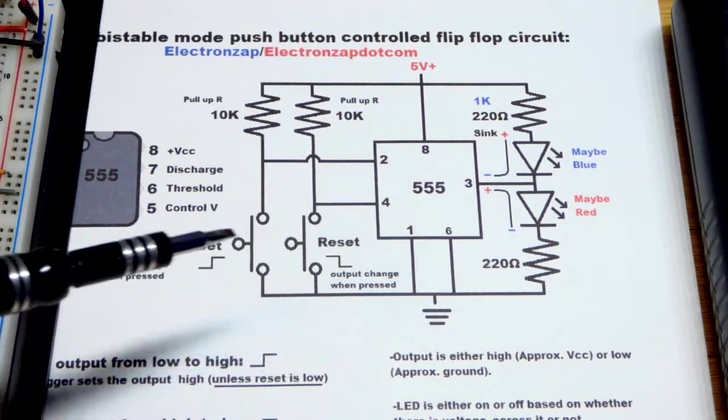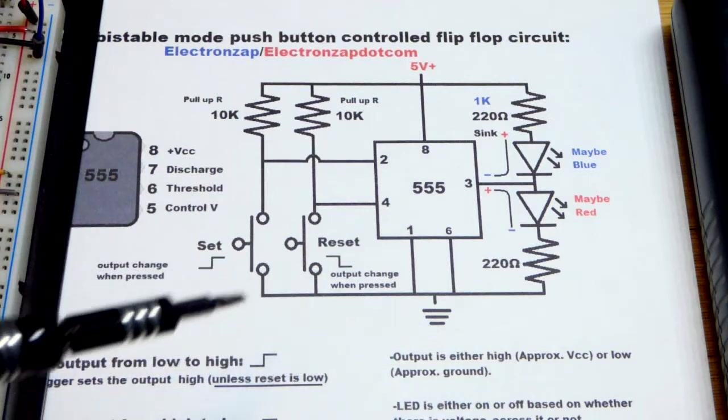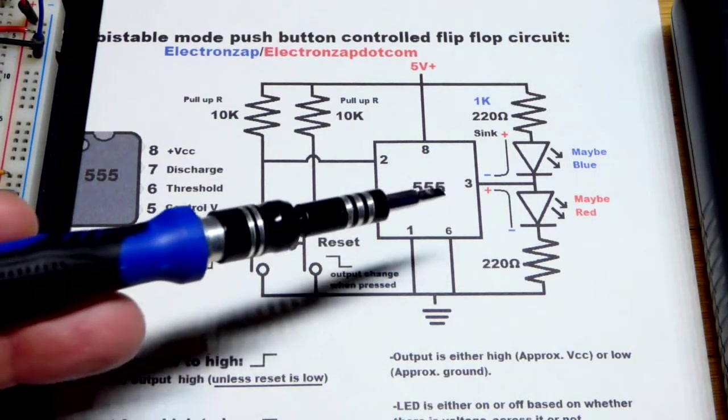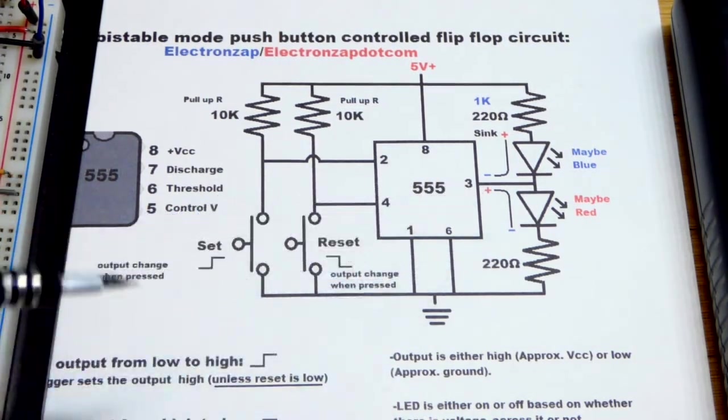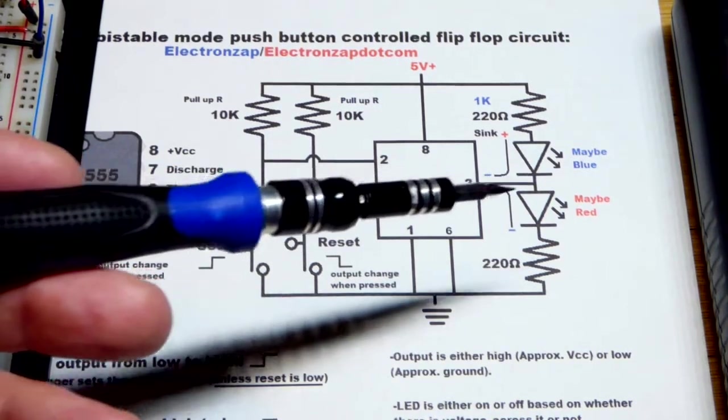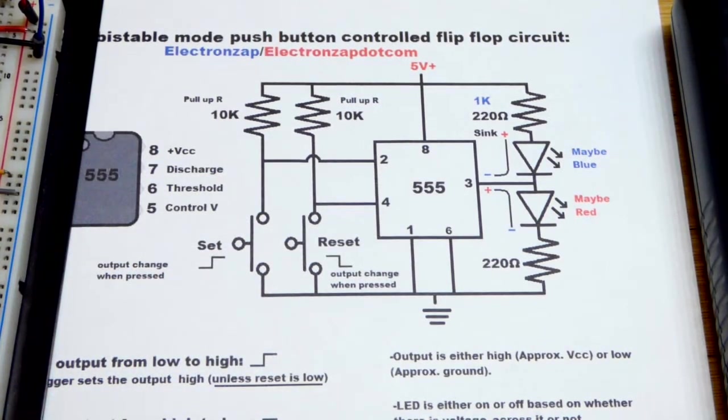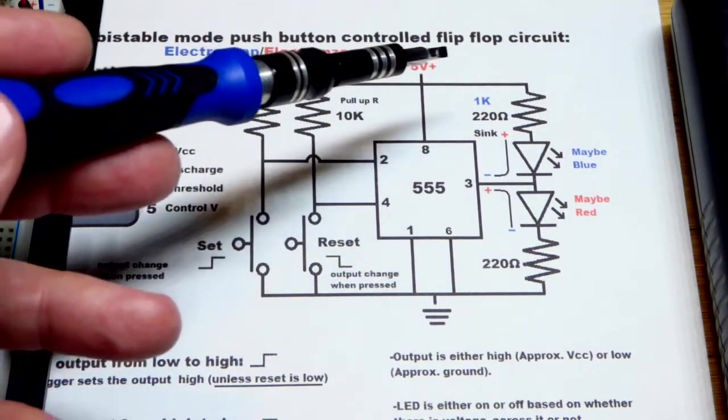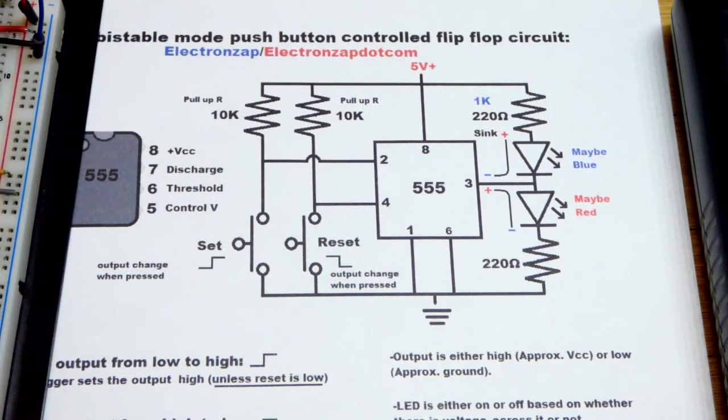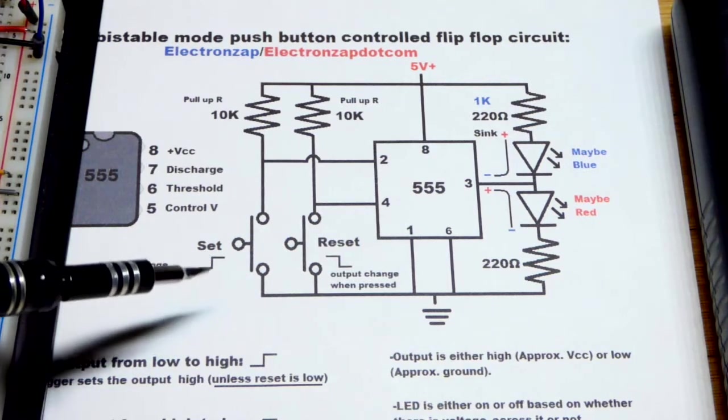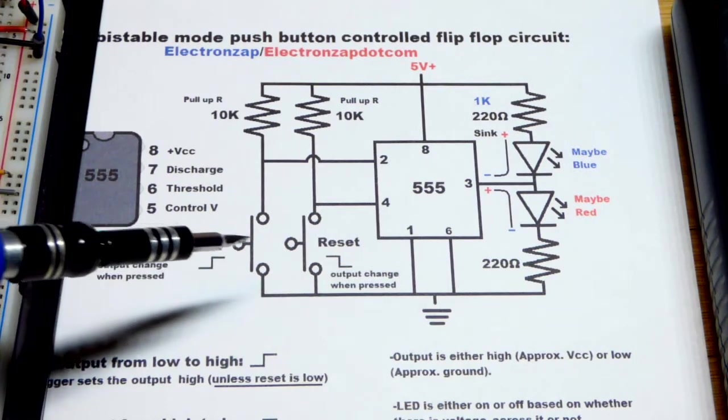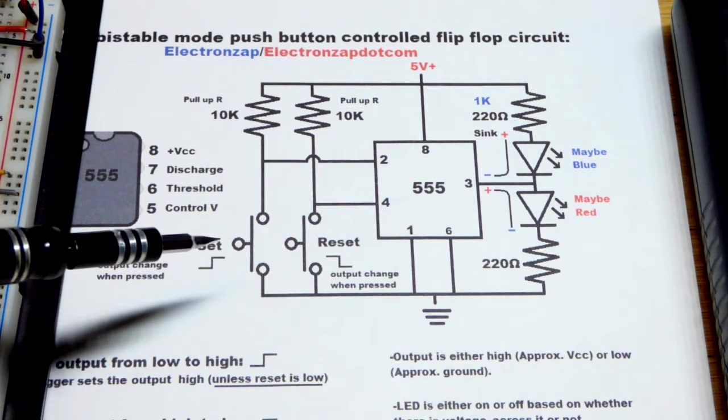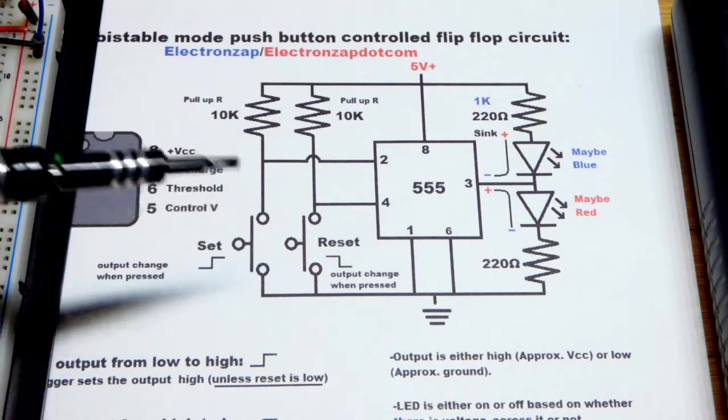We're going to wire it up in bistable mode, as you can see here. So bistable means the output is stable in two positions. You have to do something to change what the output does once it's in a certain position. You can commonly call it a flip-flop also. And so if the output is low and we press the set button, that's going to set it high. If it's already high and we press it, it will just stay high.